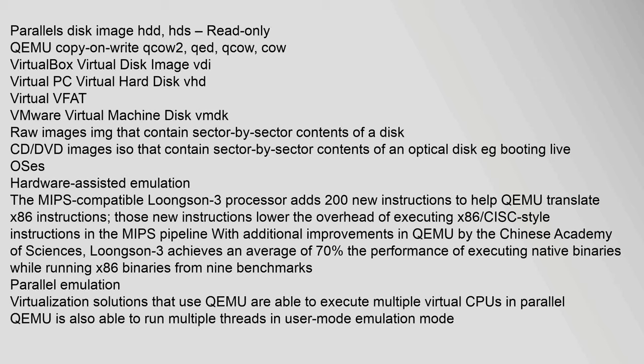The MIPS-compatible Loongson 3 processor adds 200 new instructions to help QEMU translate x86 instructions. These new instructions lower the overhead of executing x86 CISC-style instructions in the MIPS pipeline. With additional improvements in QEMU by the Chinese Academy of Sciences, Loongson 3 achieves an average of 70% the performance of executing native binaries while running x86 binaries across nine benchmarks.